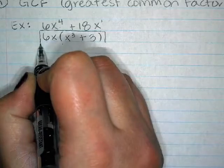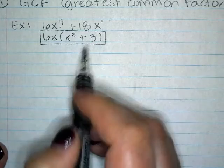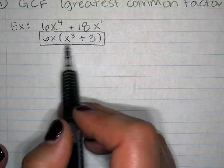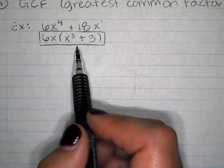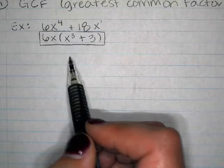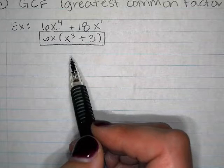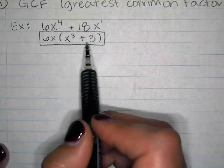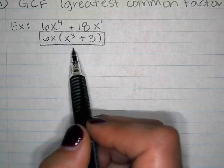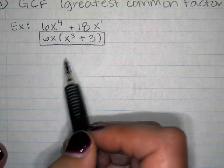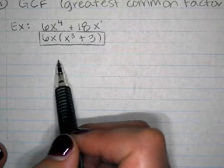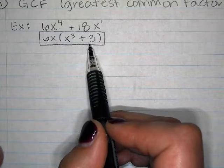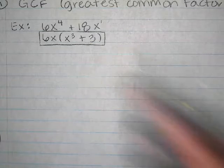Now if the thing that's in the parentheses could be factored further, you would. This is x to the third plus 3 — that kind of looks like sum of cubes. But instead of being like x-cubed plus 27 or x-cubed plus 8, the number 3 is not a perfect cube. So that's why we're stopping here; we're not going any further.